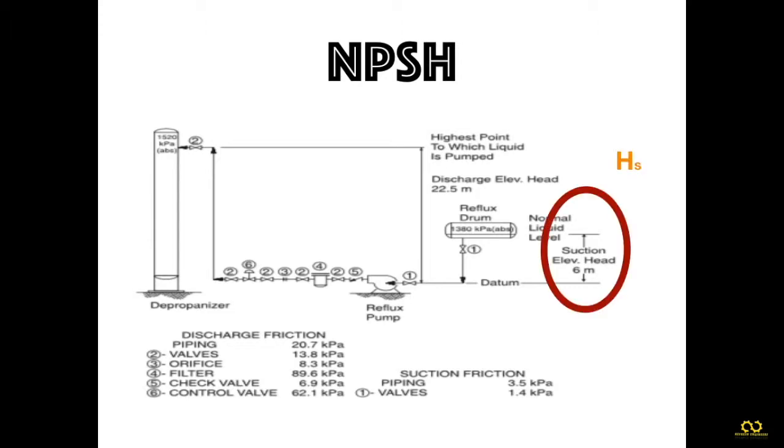Next is Hf, the friction loss. As I mentioned, cavitation appears during the suction stage, so you need to consider friction in the suction. The given friction for piping and valves on the suction side is: piping 3.5 kilopascals and valves 1.4 kilopascals. These kilopascal values should be converted to meters or feet. In this example I'm using meters.